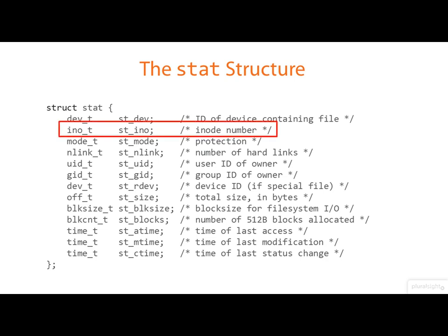It contains the inode number of the file, as we've already discussed. This field here, ST_mode, contains the access permissions on the file — the read, write, and execute stuff — along with the file type. And we'll look at that in more detail later.